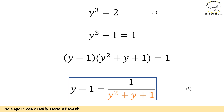Let's start with equation 2: y cubed equals 2. If we subtract 1 from both sides, y cubed minus 1 equals 1. Applying the standard factoring identity, we get that y minus 1 equals 1 over (y squared plus y plus 1). Let's call this equation 3.